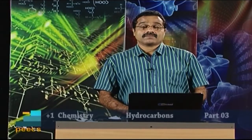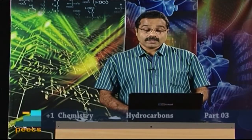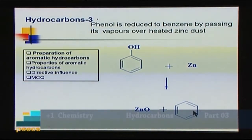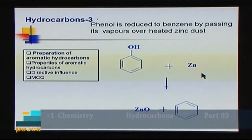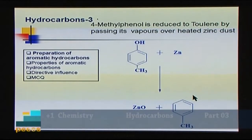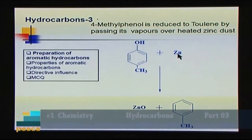The third method starts from phenol. Phenol can be reduced to benzene by heating with zinc — zinc removes the oxygen atom and it is converted to benzene. When we employ 4-methylphenol with zinc, zinc removes the oxygen and the product is toluene. In the same way, other alkyl-substituted phenols on reaction with zinc give the corresponding aromatic hydrocarbons.